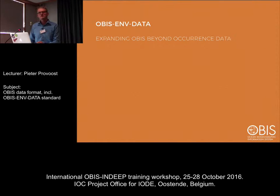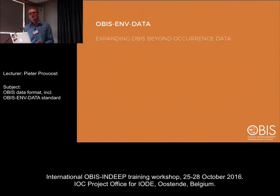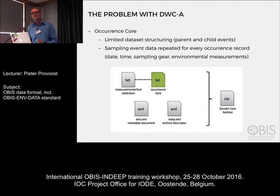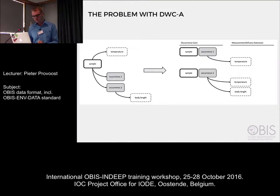The second part of this presentation is about OBIS-ENV data. This is a project we did during the last year to overcome some problems we had with the Darwin Core Archive format when we tried to add environmental data and biological measurements to our datasets. A very simple dataset would just be an occurrence core, but the options for structuring your dataset are a bit limited with just an occurrence core — you would preferably use event core. Also, all information related to sampling or environmental measurements would need to be replicated in every occurrence record.